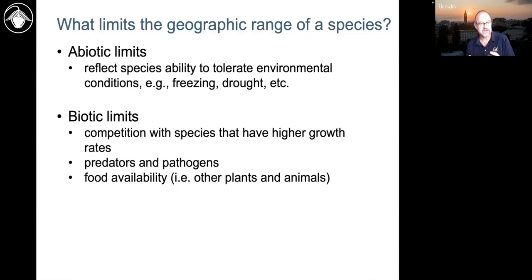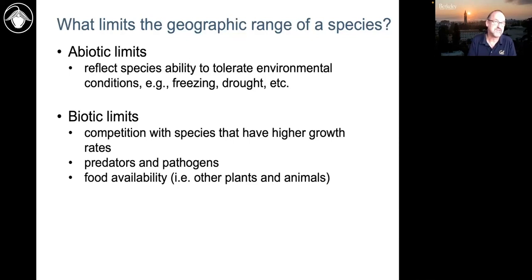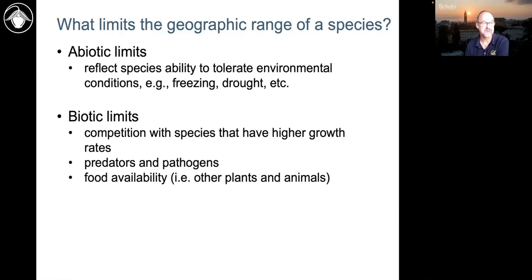The biotic limits are the effect of the other species in the environment. A species might be able to tolerate the environmental conditions, but if there's a better competitor that is growing faster, it'll be locally extirpated and not live there. It's that combination of tolerating the abiotic conditions, and then how species react to competitors, predators, or pathogens — or for animals, whether they have food to eat, whether plants or other animals.